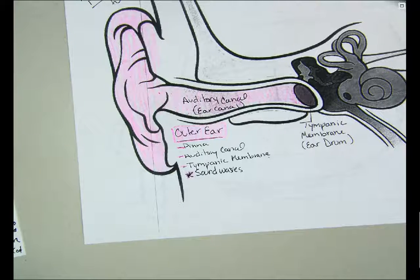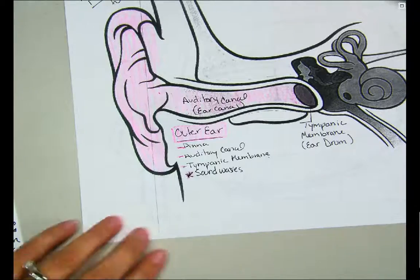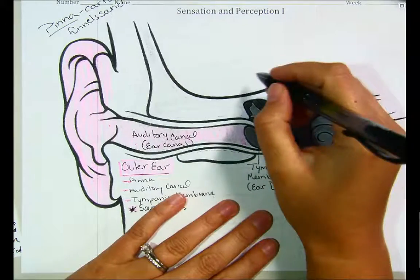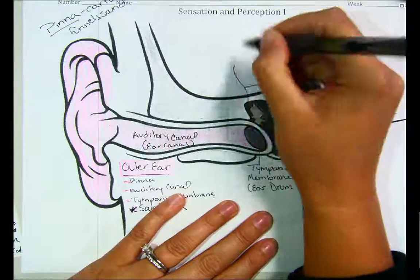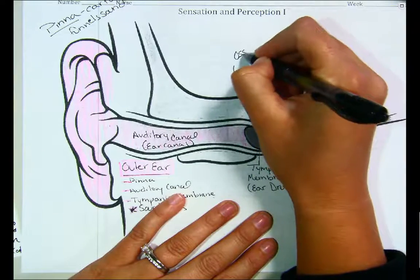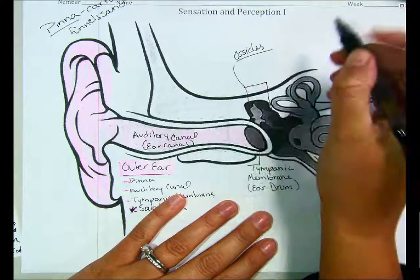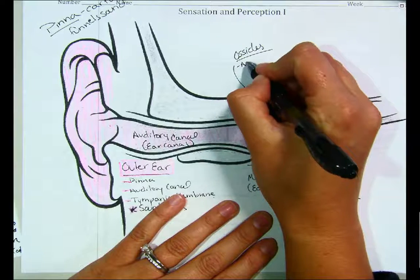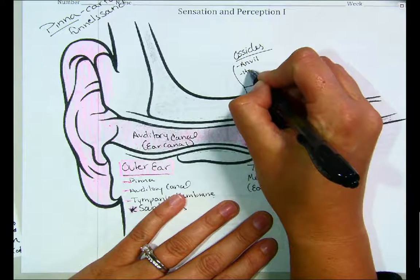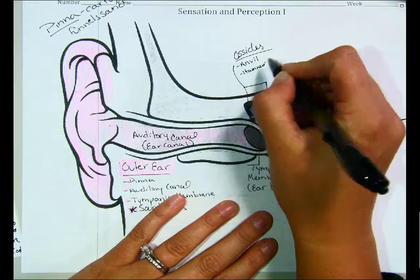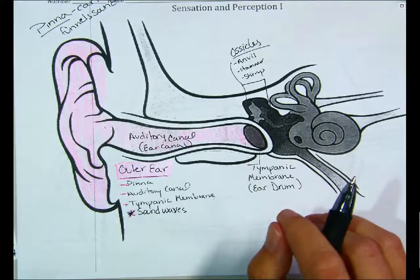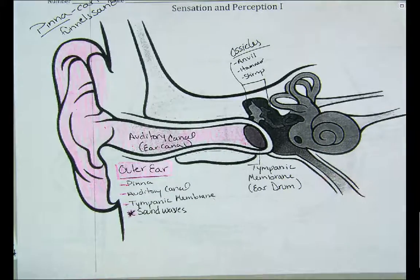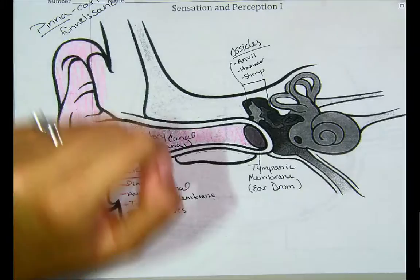On the other side of your tympanic membrane you have three of the smallest bones in your body, known as your ossicles. They are the anvil, hammer, and stirrup — the three smallest bones in your body — and they make up something called your middle ear.